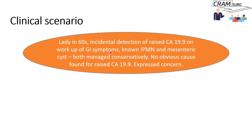You don't want to do tests that are not directly relevant to the patient's problems, otherwise you risk incidentally picking up abnormalities which may not have clinical relevance but may lead to unnecessary testing and intervention. So anyway, she had raised CA-19-9 and is known to have IPMN — intraductal papillary mucinous neoplasm of the pancreas — a condition often picked up on imaging.